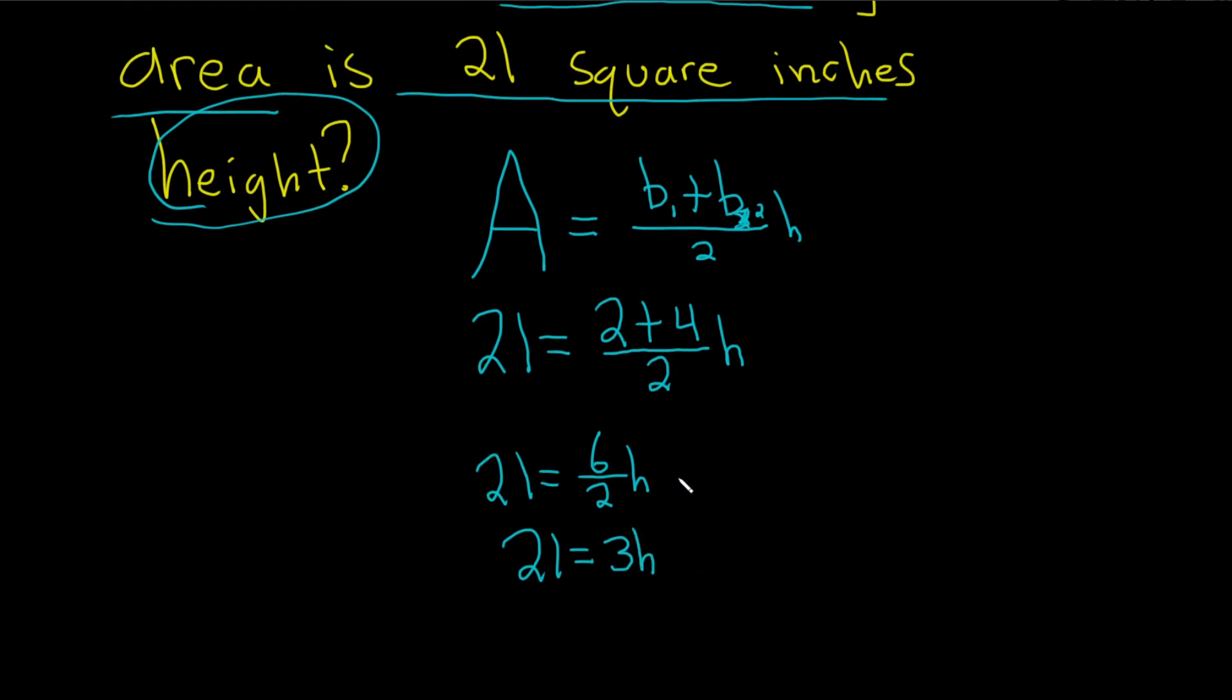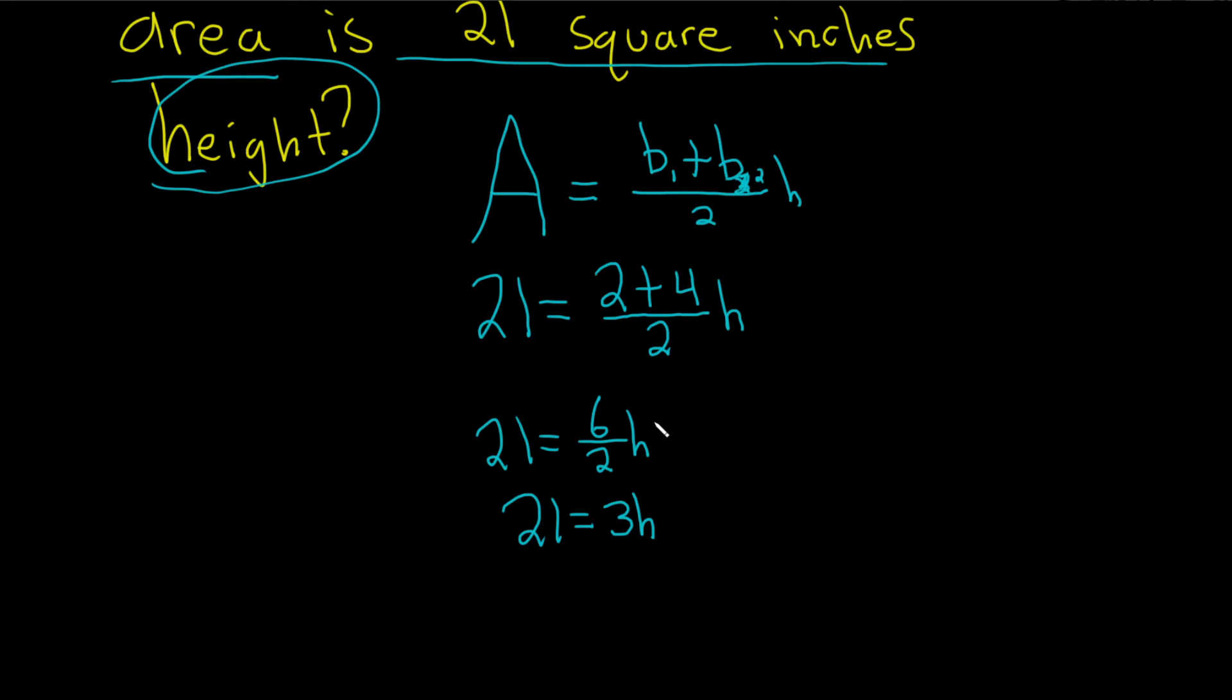Because the h is being multiplied by three, to undo the multiplication, we use division. So divide by three on both sides, and we end up with h equals seven.